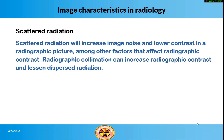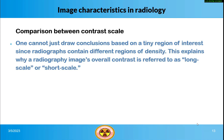Scattered radiation will increase image noise and lower contrast in a radiographic picture, among other factors that affect radiographic contrast. Radiographic collimation can increase radiographic contrast and lessen dispersed radiation. One cannot simply draw conclusions based on a tiny region of interest since radiographs contain different regions of density. This is why a radiography image's overall contrast is referred to as long-scale or short-scale.